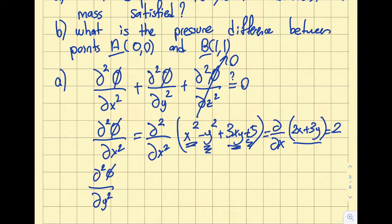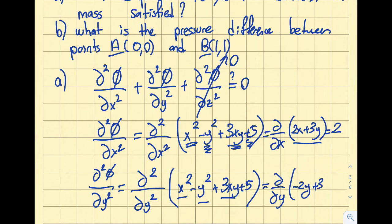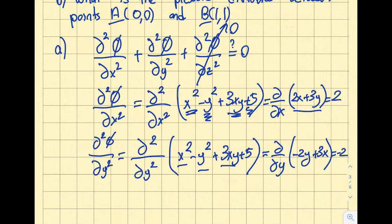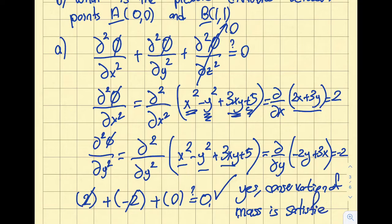Now for ∂²φ/∂y², taking the first partial of φ = x² − y² + 3xy + 5 with respect to y: x² vanishes, −y² becomes −2y, 3xy becomes +3x, and 5 vanishes. The second partial of (−2y + 3x) with respect to y gives −2. So ∂²φ/∂x² + ∂²φ/∂y² = 2 + (−2) = 0. Yes, conservation of mass is satisfied.